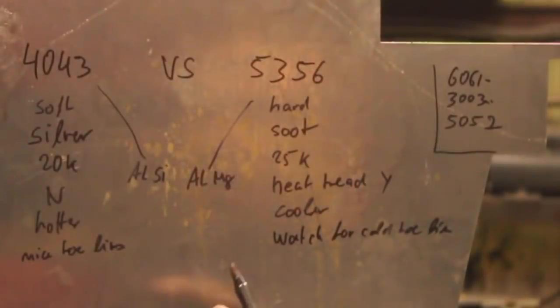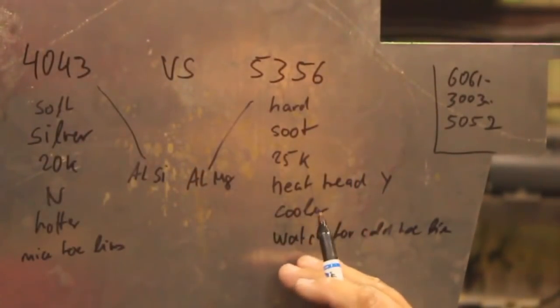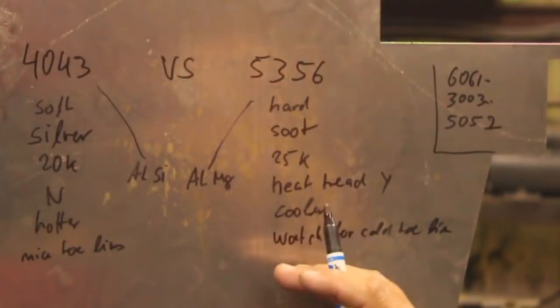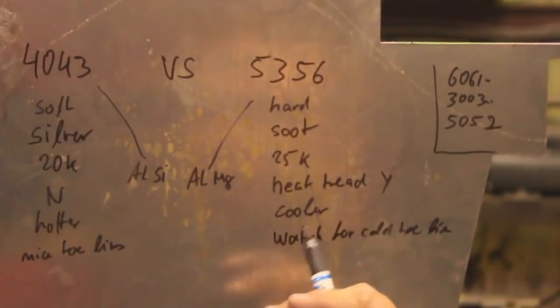On pulse aluminum, both wires work equally well. On double pulse, the 5356 may make the nicer stack of dimes TIG look.